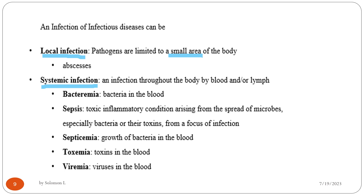Examples of systemic infections include: bacteremia — bacteria in the blood; sepsis — a toxic inflammatory condition arising from the spread of microbes; septicemia — growth of bacteria in the blood; toxemia — toxins in the blood; and viremia — virus in the blood.